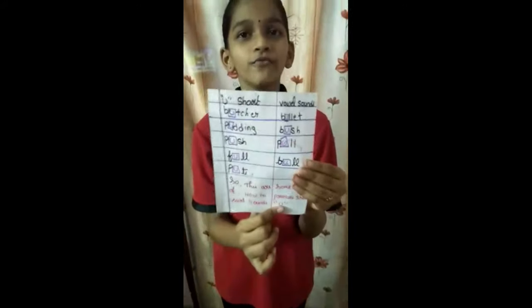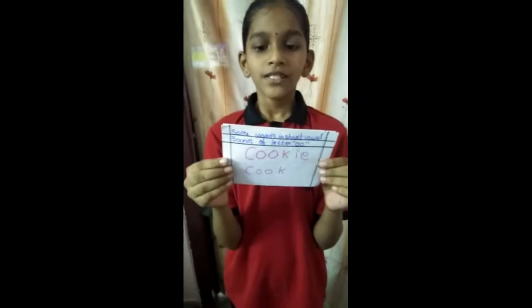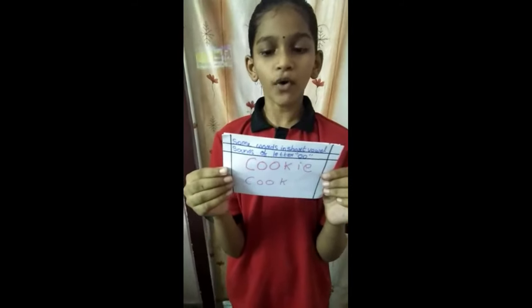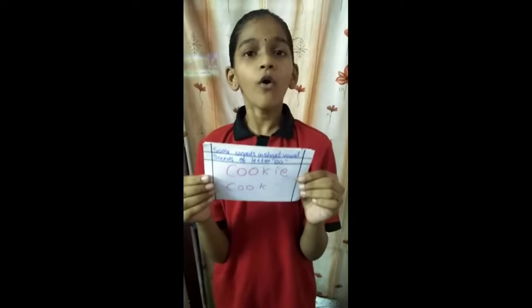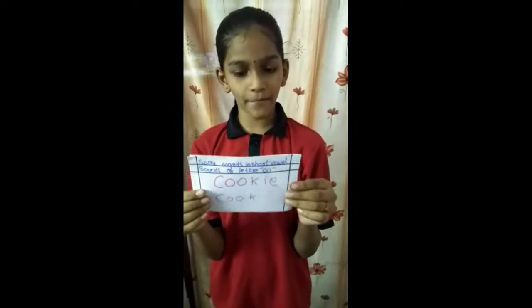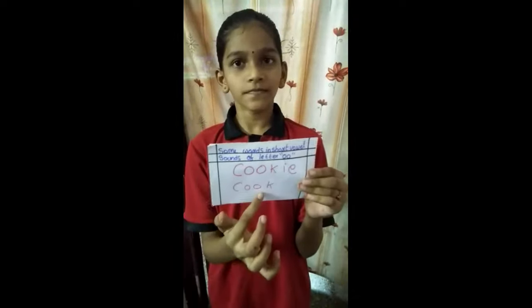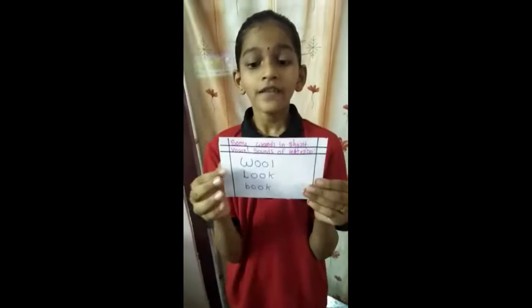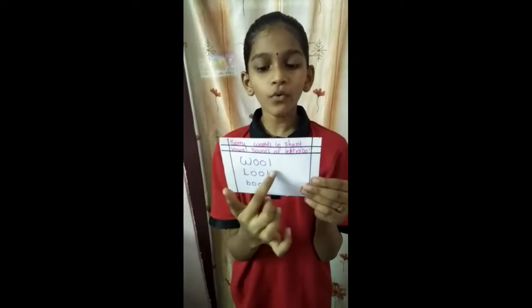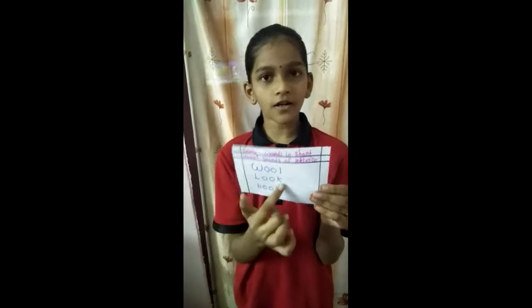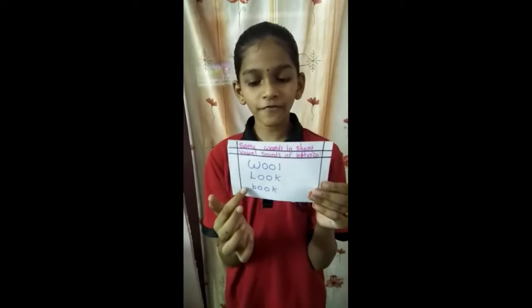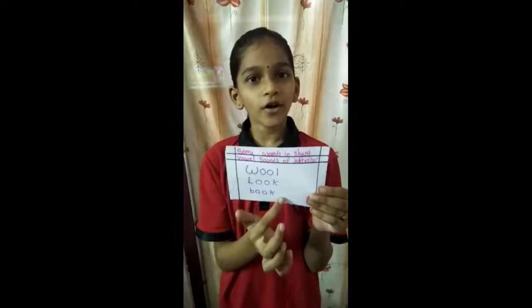Some words in short vowel sounds use the letters O and O together. First example: cookie. Second word: cook. Third word: wool. Fourth word: look. Fifth word: book. These are some examples of short vowel sounds and long vowel sounds and their pronunciations.